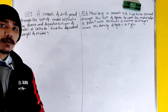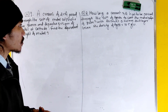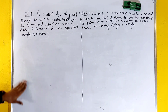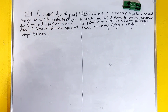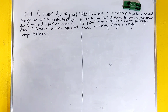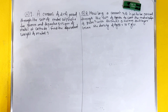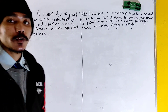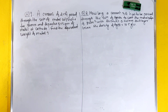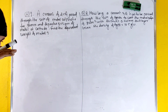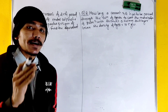Now I will start with question number one. A current of 2.5 ampere passes through a solution of metal sulfate for 30 minutes and deposits 1.52 grams of metal at the cathode. Find the equivalent weight of the metal.